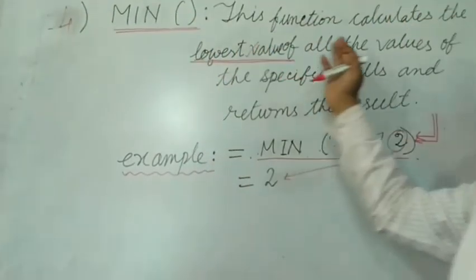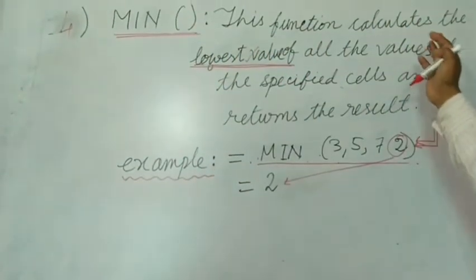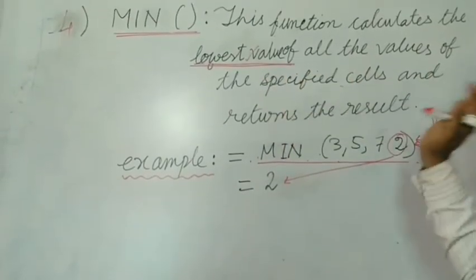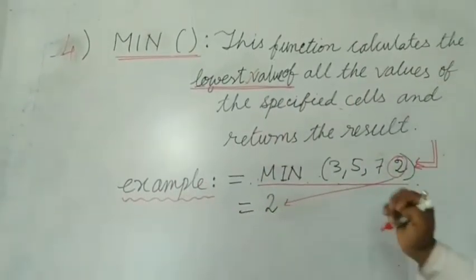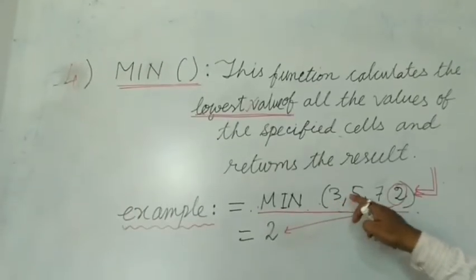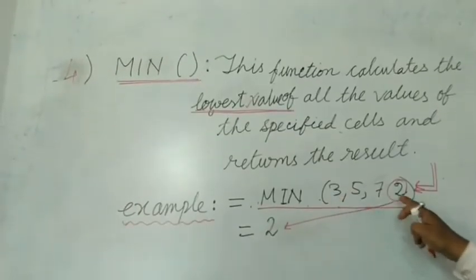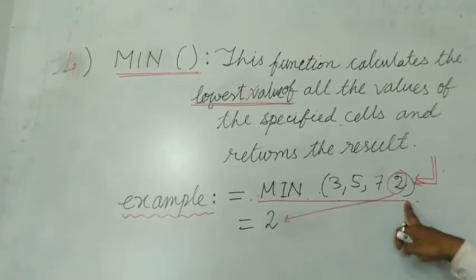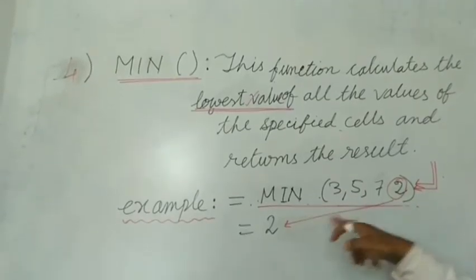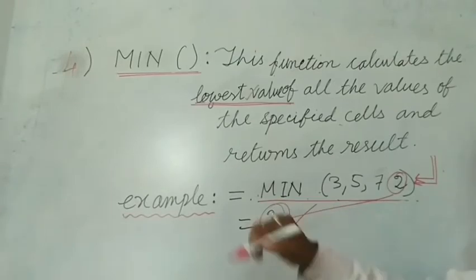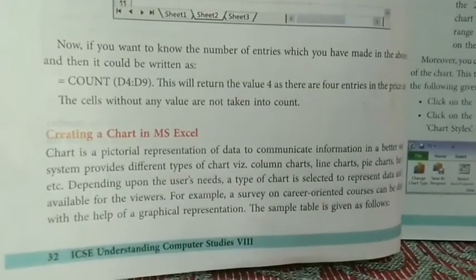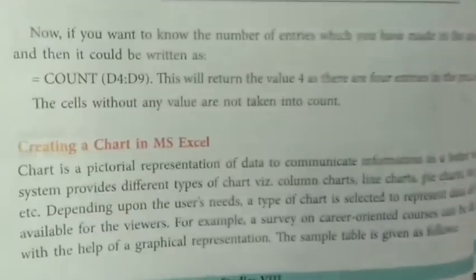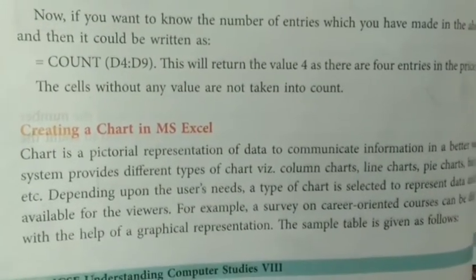The next function is MIN. This function calculates the lowest value of all the specified cells and returns it. Example: =MIN(3,5,7,2) — the smallest or lowest number is 2, and that will be displayed.